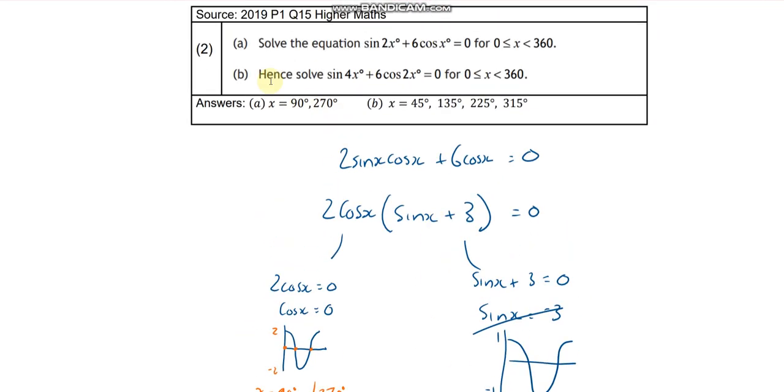And the last bit of the question is, hence solve this. So what's changed from the first bit to the second bit? Well, the periods have changed, haven't they? What have we done to our periods?